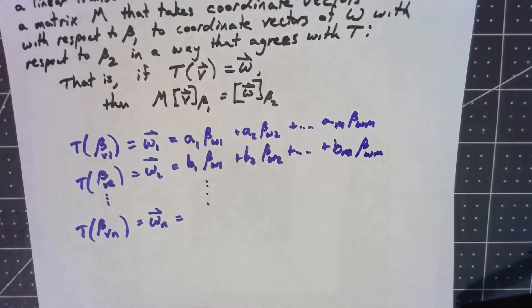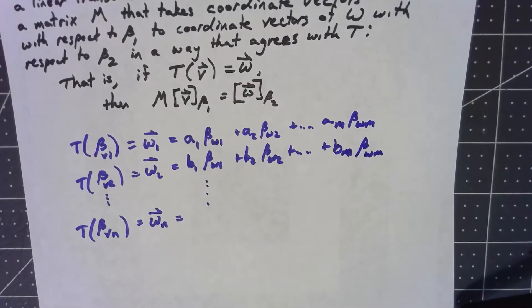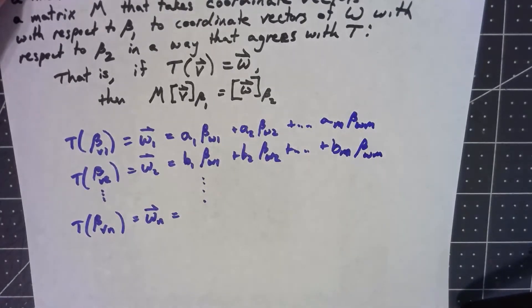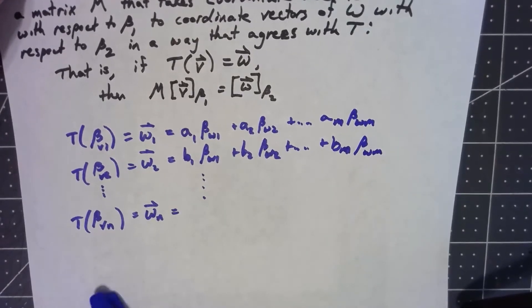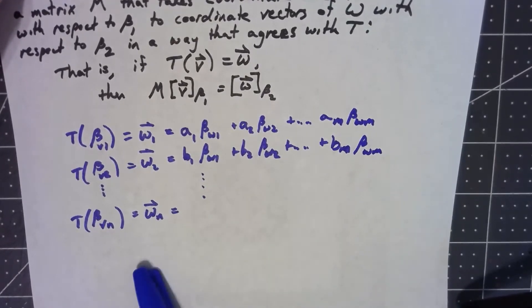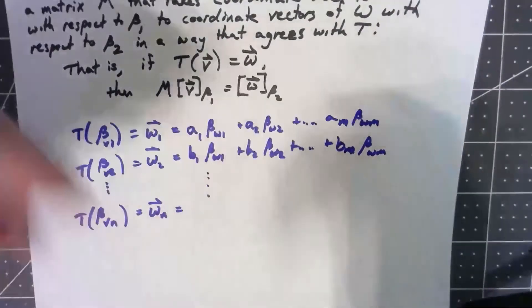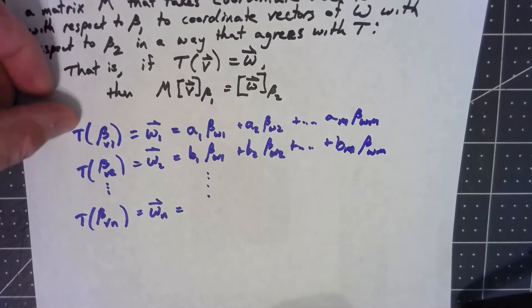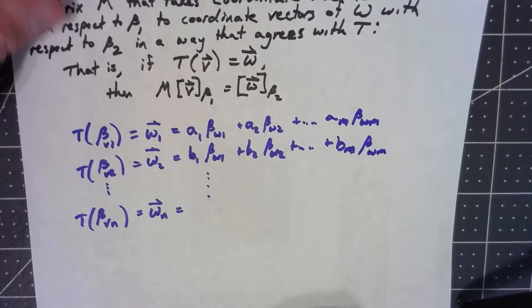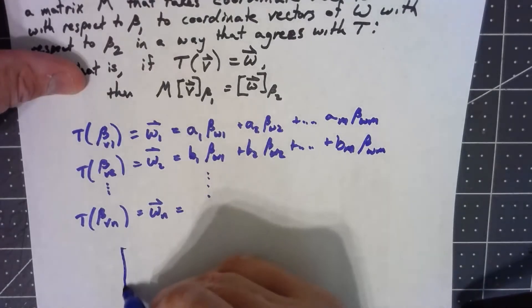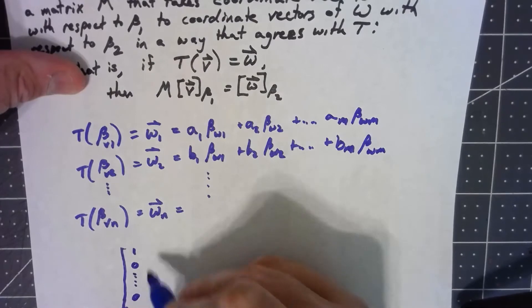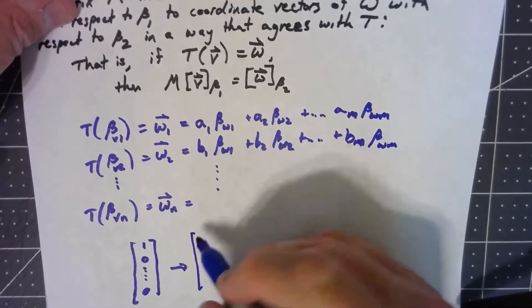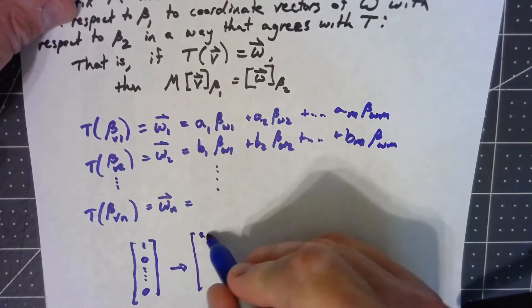And so on down the line. I probably shouldn't have used A's and B's, but it's getting confusing enough already with subscripts. Every one of these things has a linear combination. So in terms of the coordinate vectors, what we're saying, since this is my first basis vector in the basis for V, its coordinate vector would be something where we've got one and then zeros everywhere else. And we're saying that's mapping to, well the whole idea of the coordinate vector is it's mapping to A1, A2, down to AM.